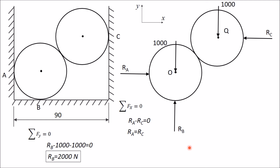To determine RA and RC, apply the third equation ΣM = 0. Choose a moment point through which the maximum number of forces pass. Point O is chosen because RA, the 1000 Newton force of the left sphere, and RB all pass through it — so their moments are zero. The remaining forces whose moments must be calculated are RC and the 1000 Newton force of the right sphere.